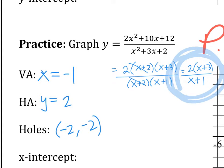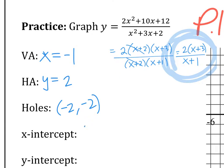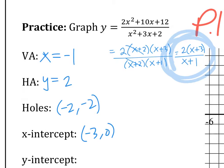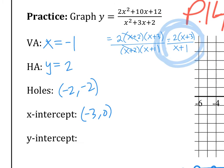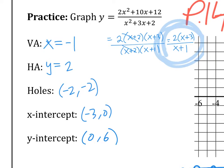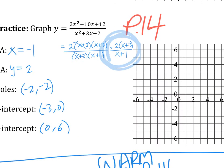To find the y-value of the hole, plug x = −2 into the reduced function — the answer is y = −2, so the hole is at (−2, −2). The x-intercept is what makes the numerator zero, which is x = −3. The y-intercept is when x = 0, which gives (0, 6).